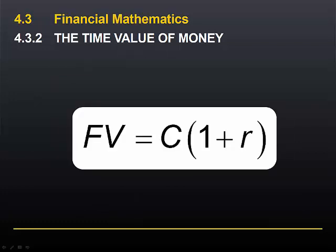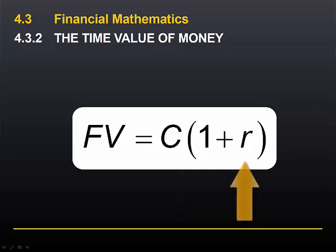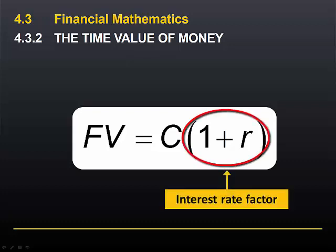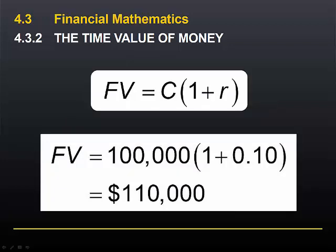We can use this formula to relate a cash flow received today to its future value. In this formula, C represents today's cash flow, and R is the interest rate over the period between today and the future. This means we can convert $1 today into $1 plus R dollars in the future. 1 plus R is what we call the interest rate factor, and we can use it to convert cash flows from one period of time to another. Here we can see how to use this equation to calculate the future value of $100,000 given an interest rate of 10%.